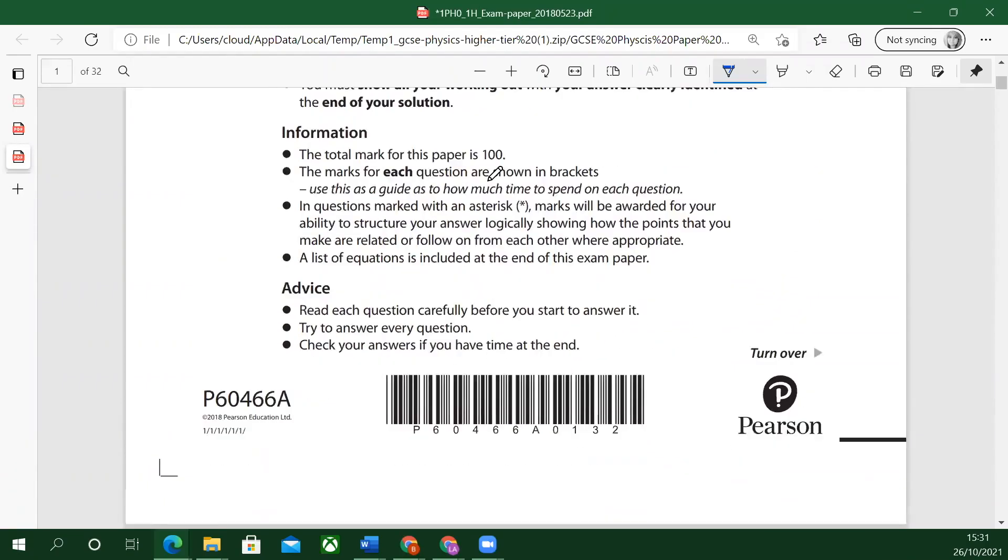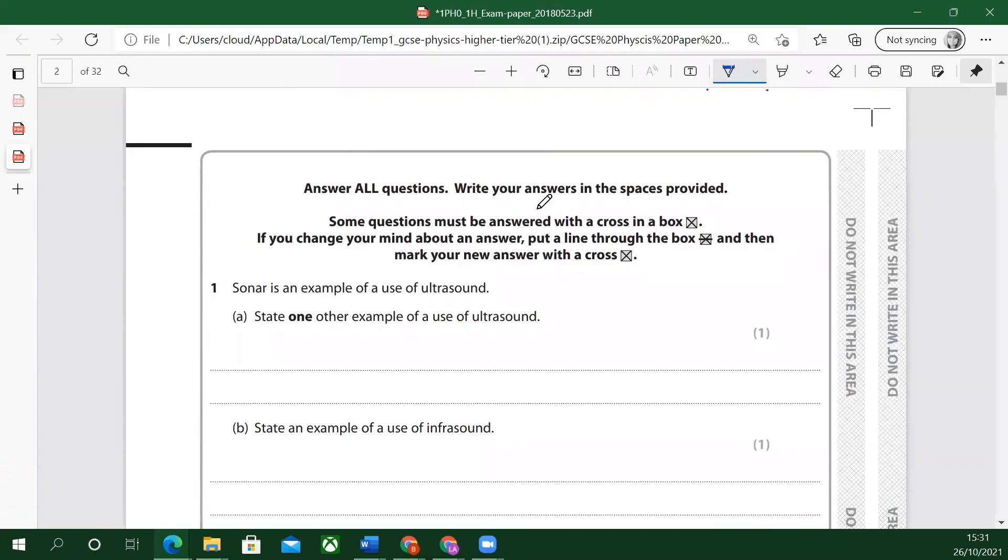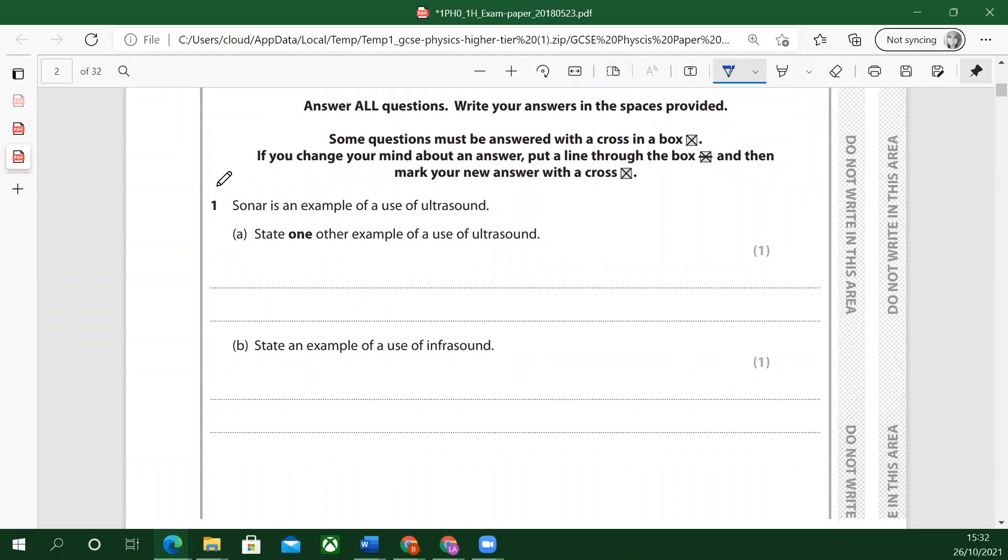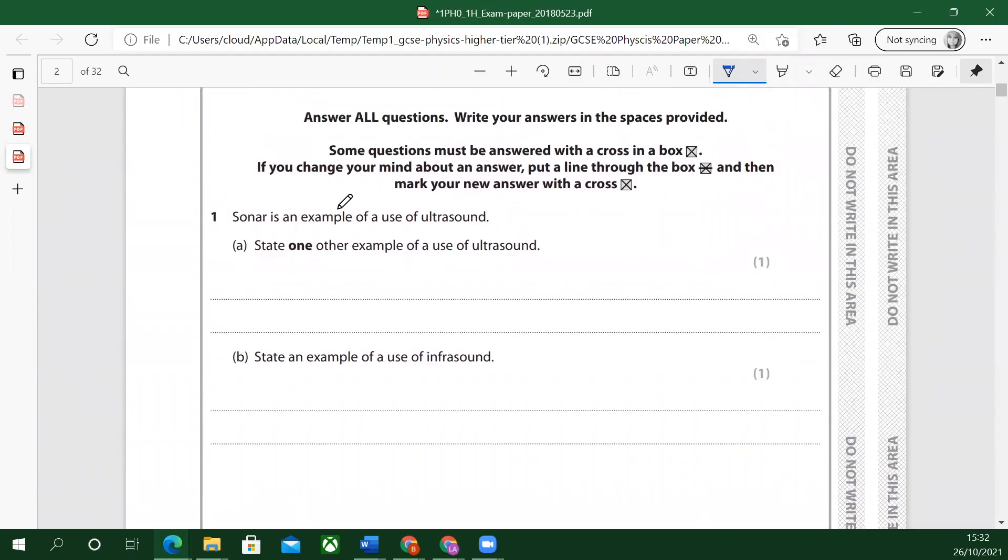Let's look at the first question. Answer all questions. Some questions must be answered with a cross in the box. If you change your mind about an answer, put a line through the box and then mark your new answer with a cross. Make sure that they can see that you've changed your mind. Sonar is an example of a use of ultrasound. State one other example of a use of ultrasound.